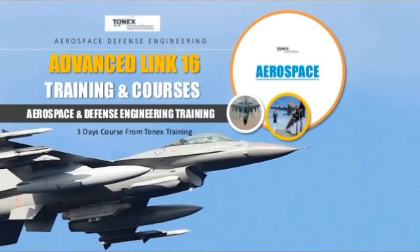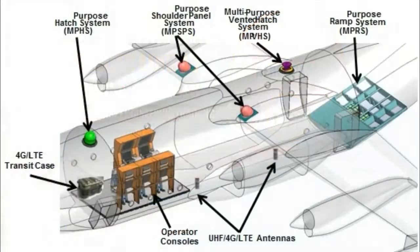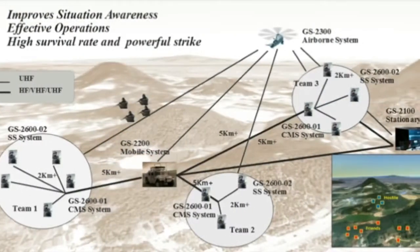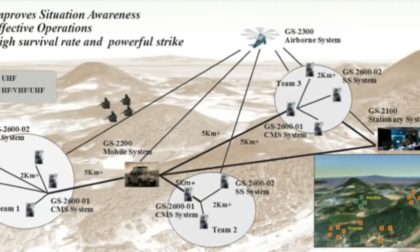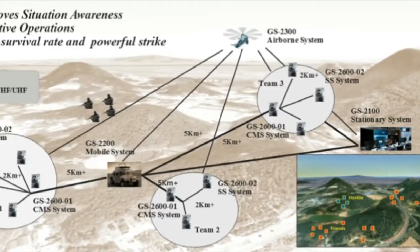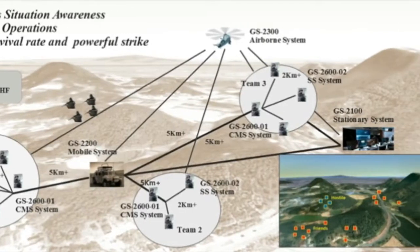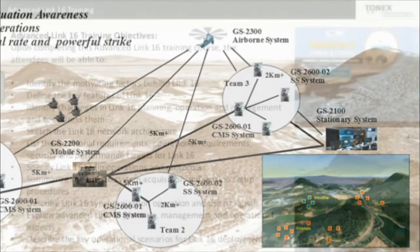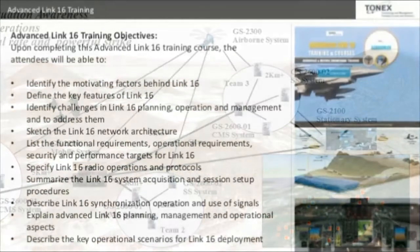Link 16 has many advantages over other existing tactical data links, such as Link 11. The network in Link 16 is known as distributed, which means the Link 16 network does not depend on any one of the terminals, featuring a distributed operation.